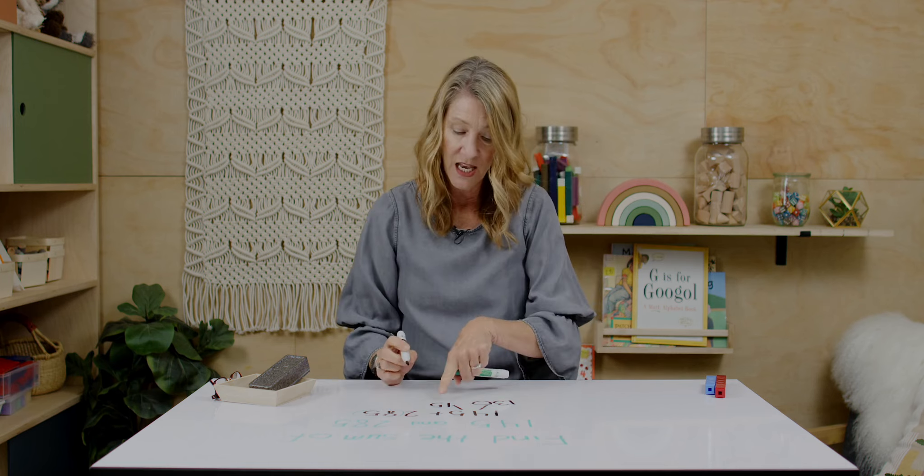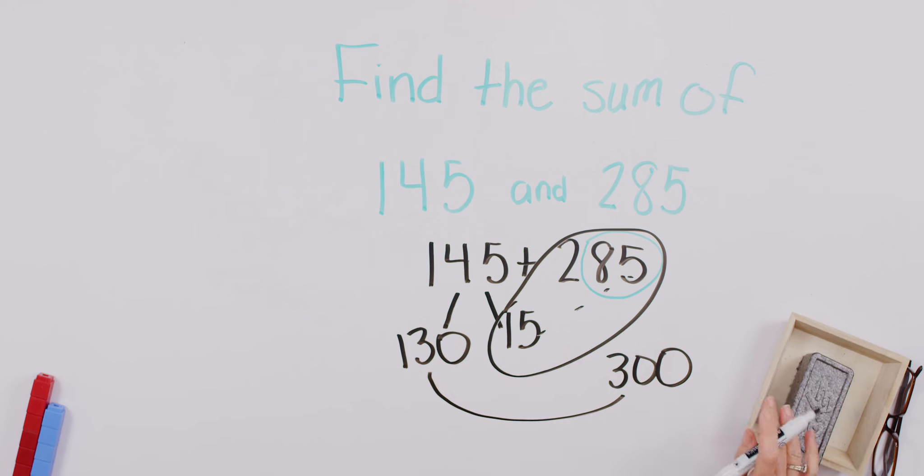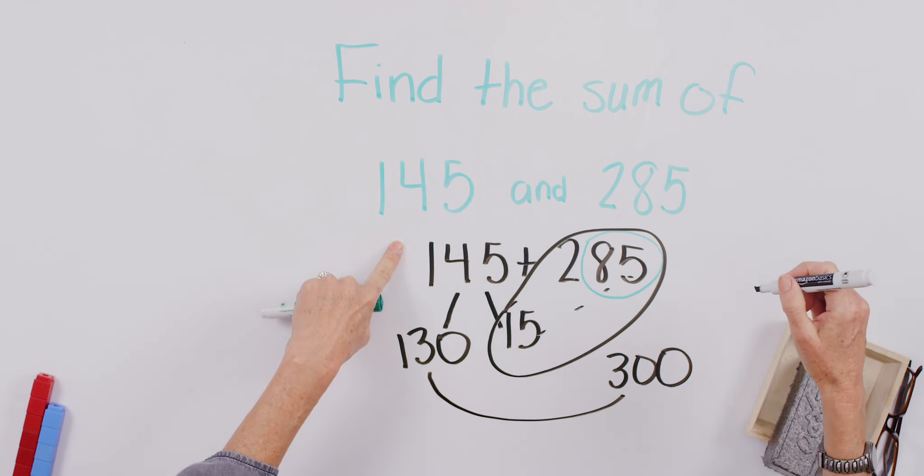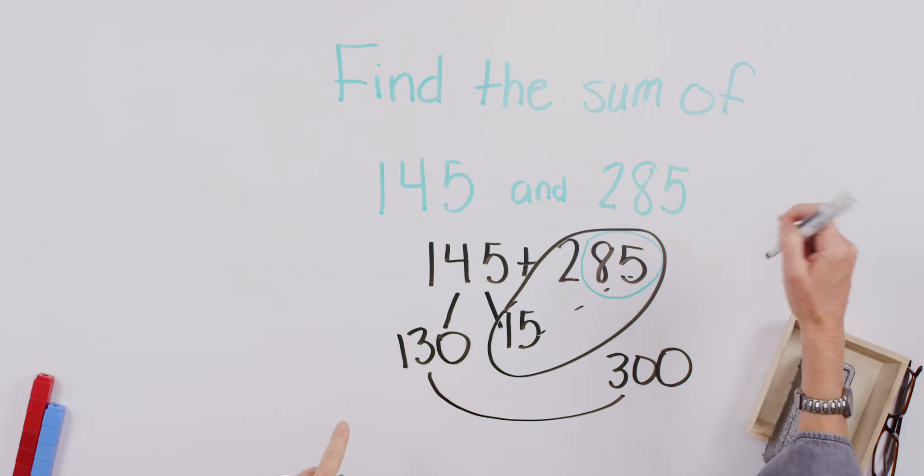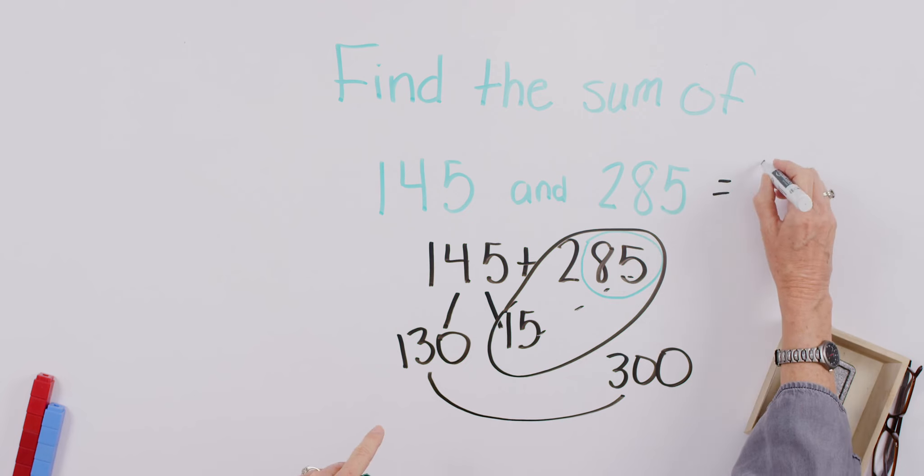Yeah. 130. Good. Now, if I remember that 15 and 85 equal 100, I can say, well, that would be 100 and plus the 200 gives me 300. Here I have 300. I'm going to join that up with my 130. The sum of 145 and 285 is 430.